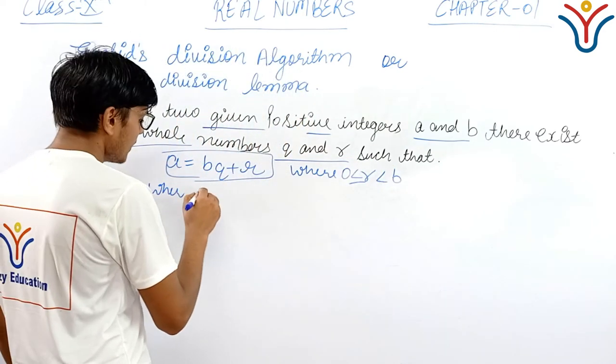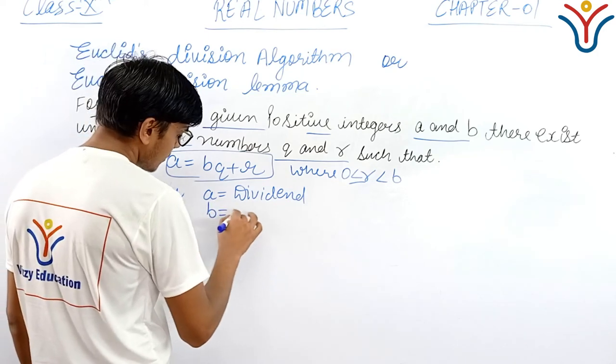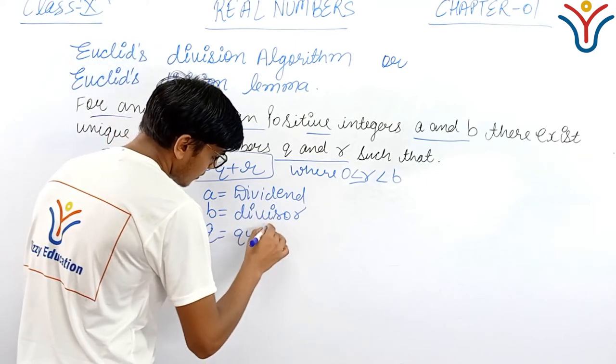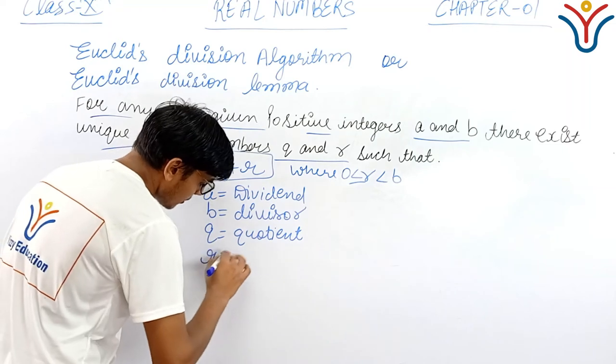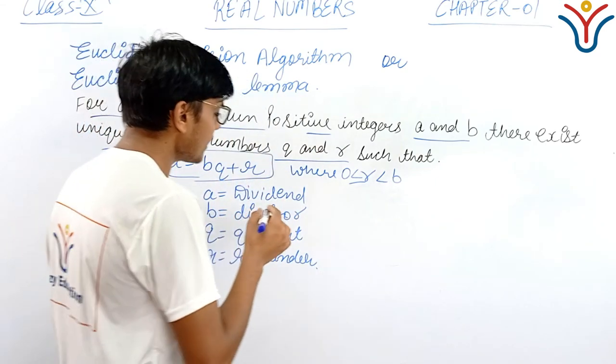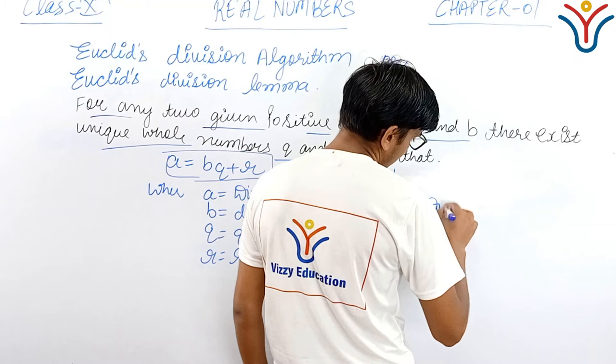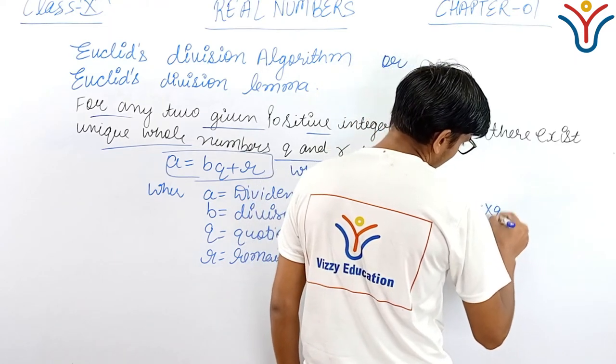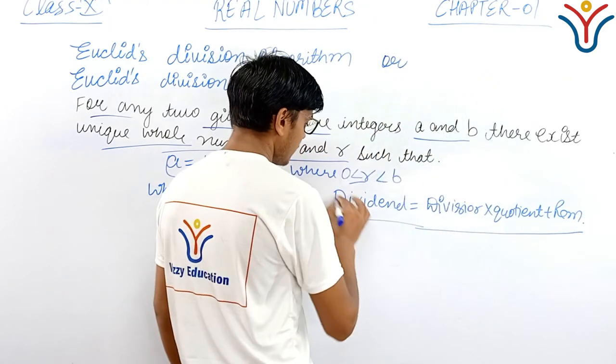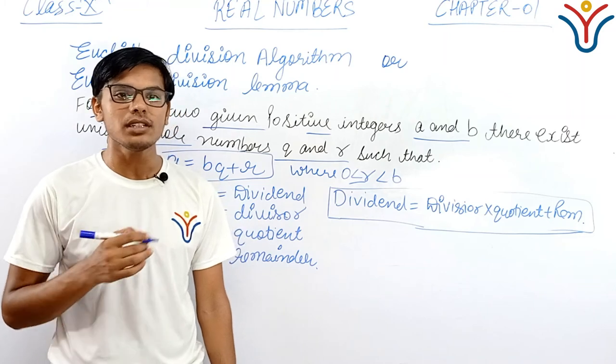Now, where A is the dividend, B is the divisor, Q is the quotient, and R is the remainder. This is the formula of the Euclid's division algorithm for finding the HCF and all the questions related to exercise 1.1.